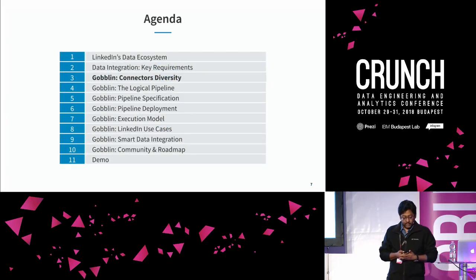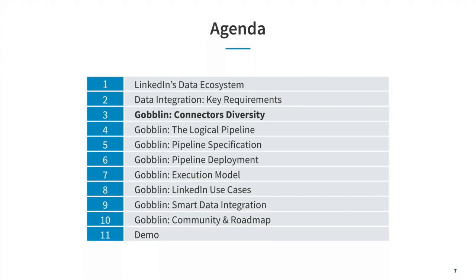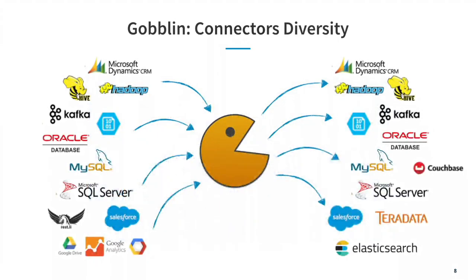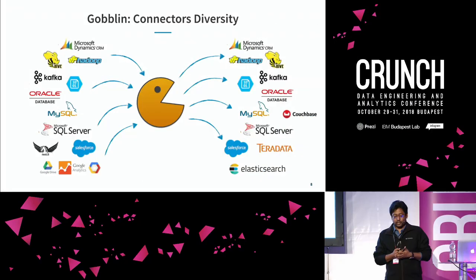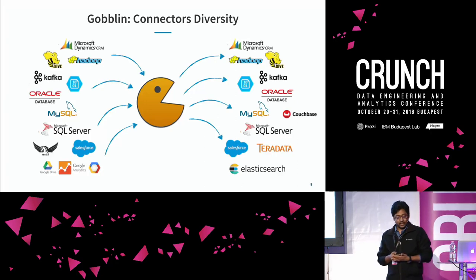Now we'll go briefly over different aspects of Goblin. The first is connector diversity — Goblin connects with multiple different systems. This slide isn't even the most recent because the ecosystem is continuously evolving, and ever since Goblin entered Apache incubation it has accelerated further. You will find a connector for your use case, and if you don't, it's very easy to write one.